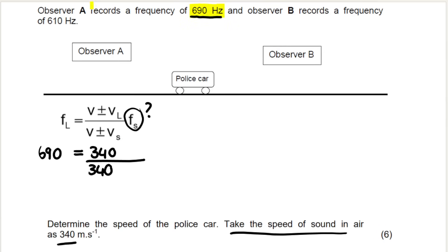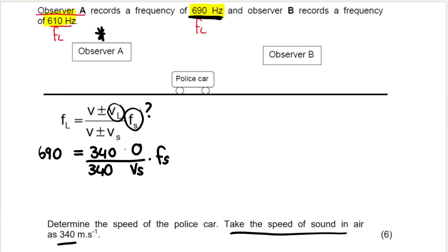Please don't get confused and think that one of these frequencies is the source and one is the listener. Observer A records 690 hertz — frequency of listener A. Observer B records 610 hertz — frequency of listener B. We don't actually have the frequency of the source; it's an unknown. We don't know what VS is either. What the question wants is the speed of the police car, VS. We may need FS as well — they may cancel out.